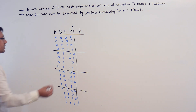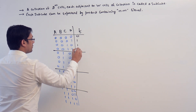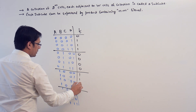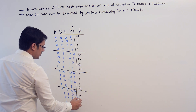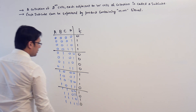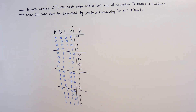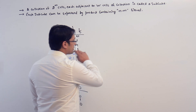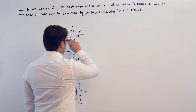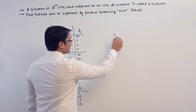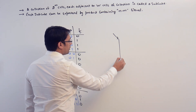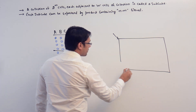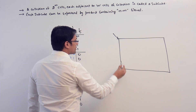Assume the function is 0111000111010 10. Since it is a 4-variable K-map, the K-map is going to have 16 cells.